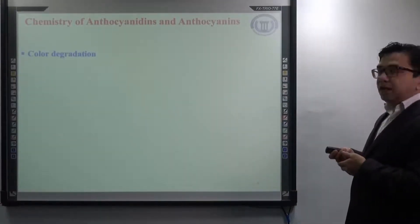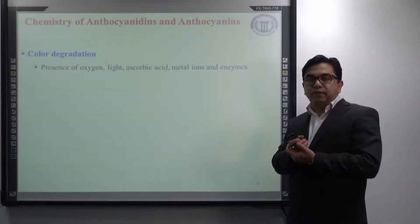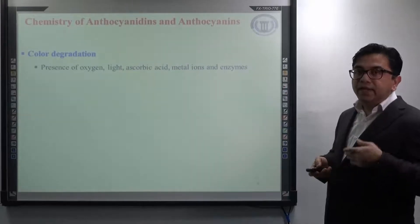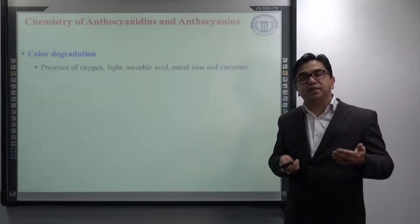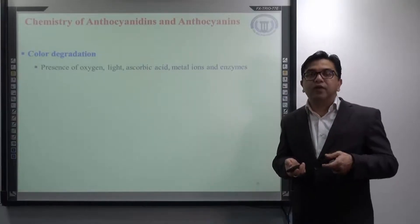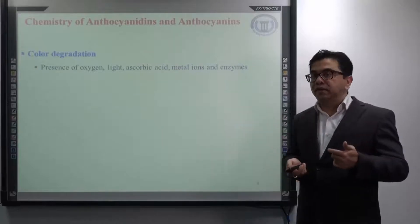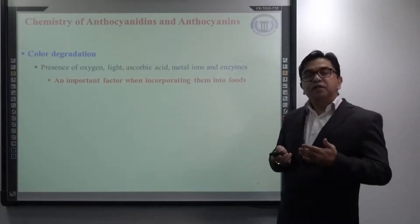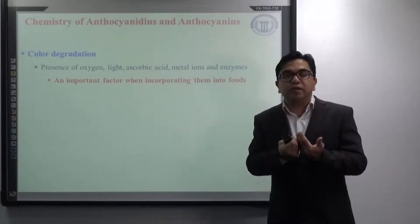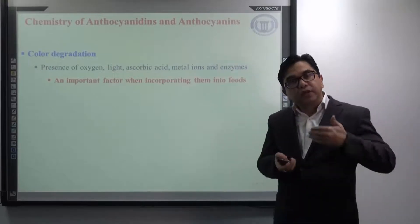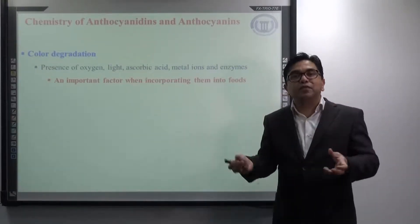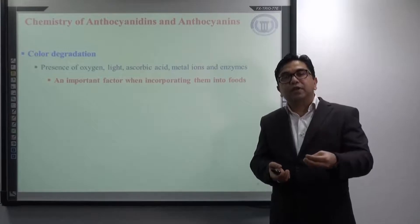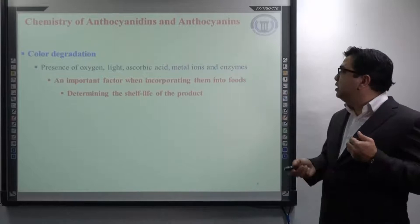Regarding colour degradation, it has been observed that anthocyanidin or anthocyanin colour may undergo degradation in the presence of oxygen, light, ascorbic acid, metal ions, and even certain enzymes — because enzymes may cause degradation of the glycosidic bond, which can impact colour. Colour degradation is considered one of the most important factors while incorporating anthocyanins in food or in the food industry for preparation of different types of food. If the colour is not stable and undergoes degradation, it will hamper the shelf life of the product.